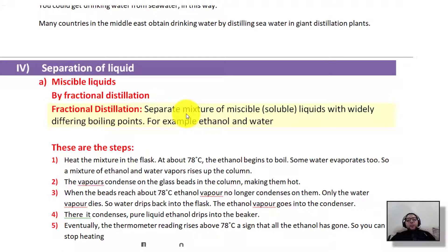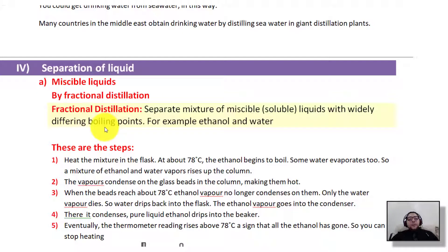So fractional distillation is the separation of mixtures of miscible liquids with widely different boiling points. The main factor we look for is the boiling point. As we discussed earlier, each liquid has a certain boiling point, and the boiling point acts as a fingerprint for a liquid, giving us a clue about the substance.